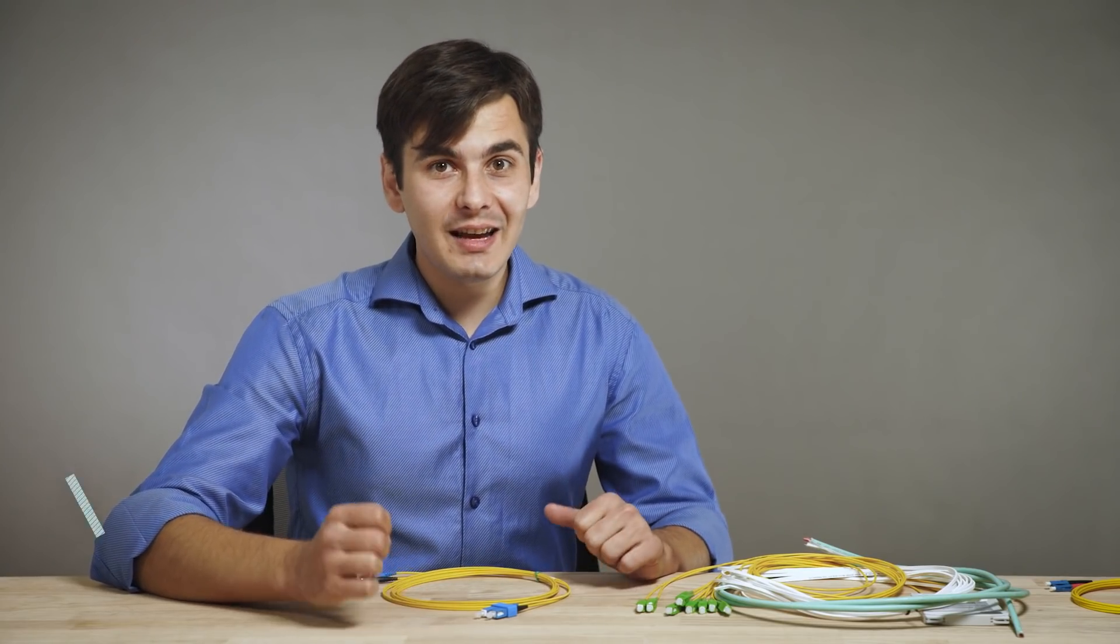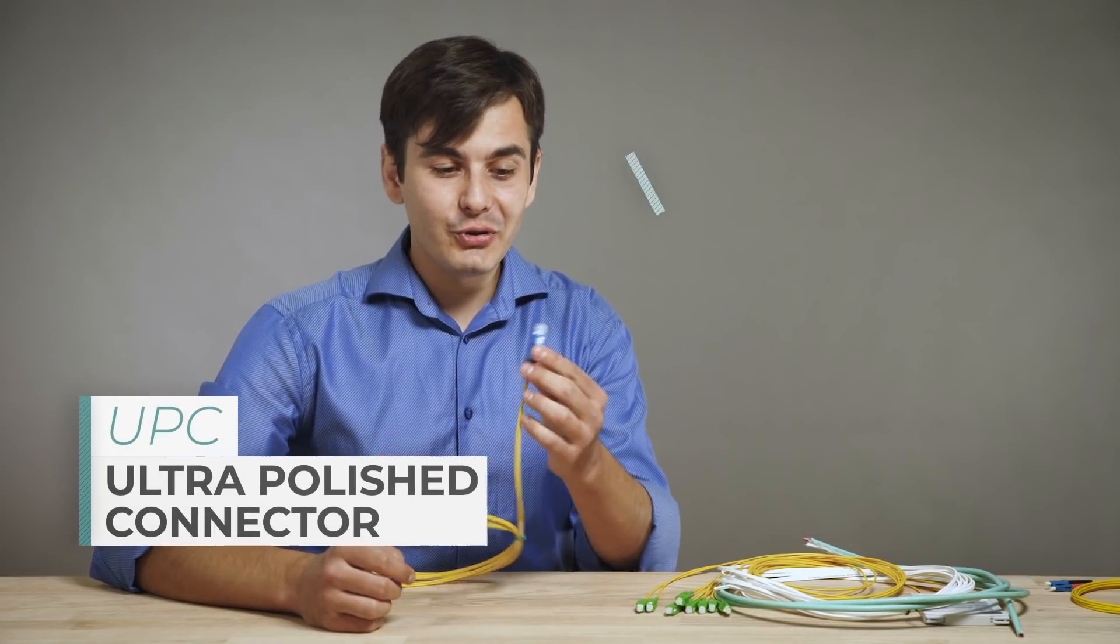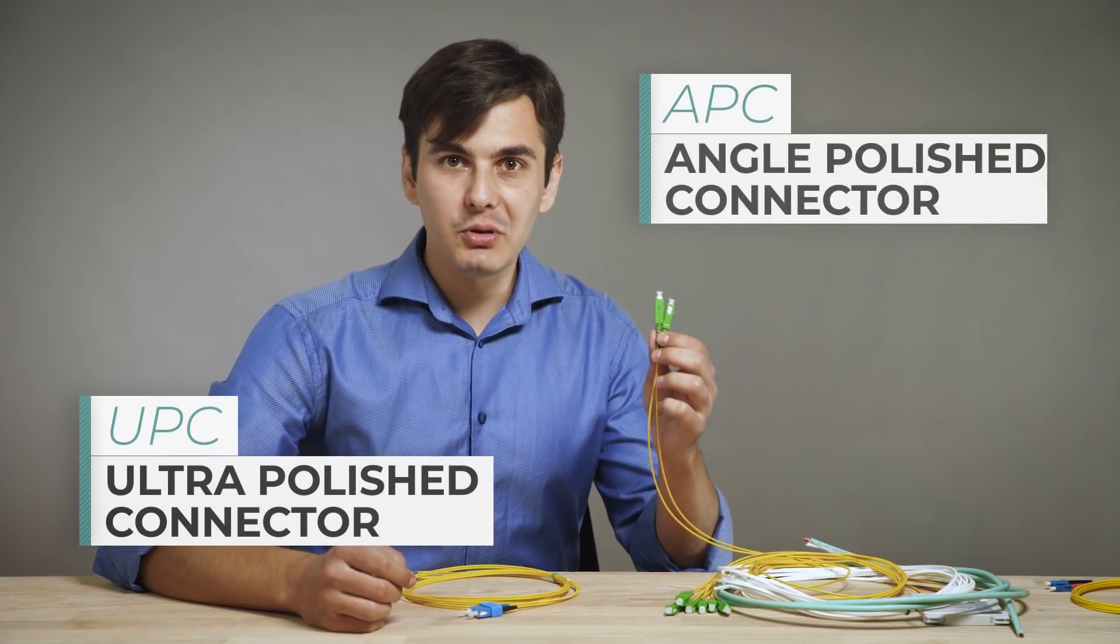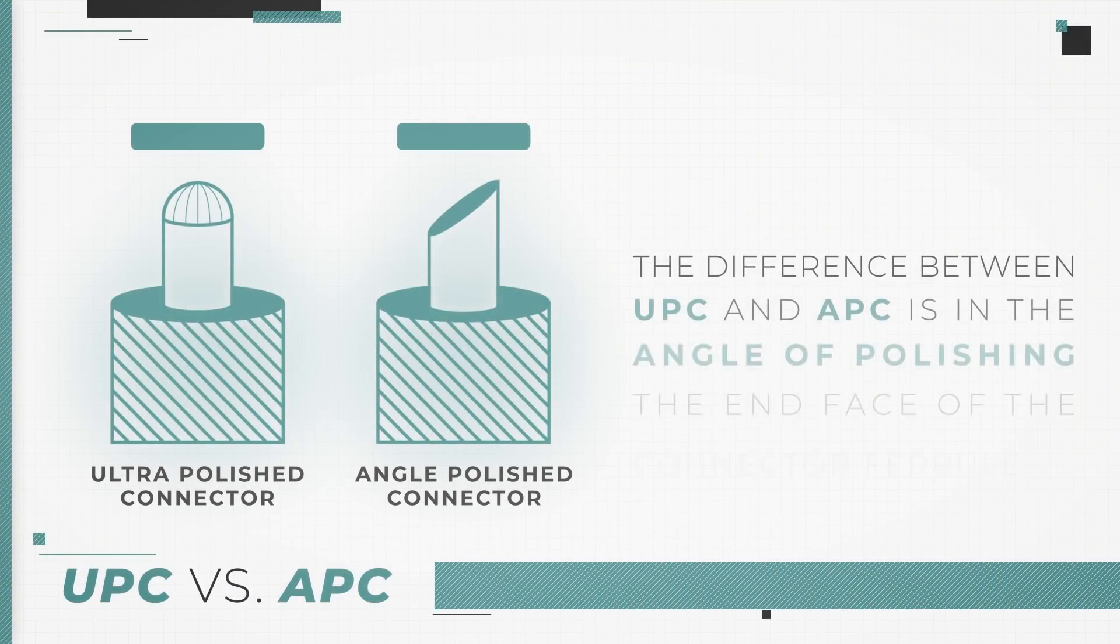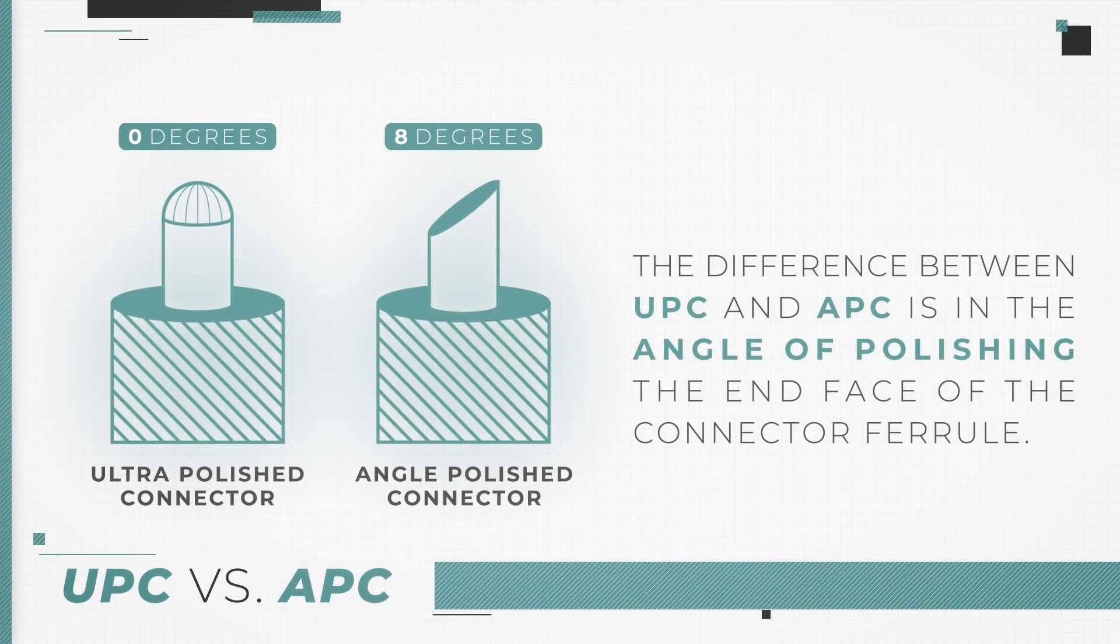Each of the connectors come in two different variants UPC and APC. Ultra Polish connectors and Angle Polish connectors. The difference between them is in the angle of polishing of the ferrule. With the UPC, the ferrule is flat, zero degrees, while with the angled, the angle of polishing is at eight degrees to reduce the reflection.